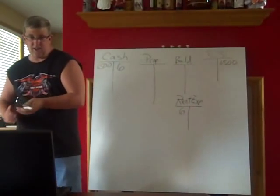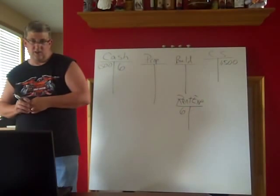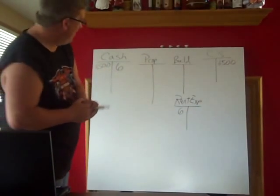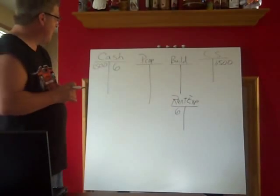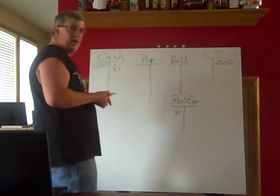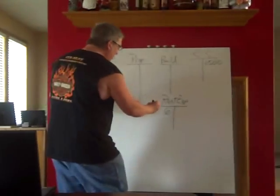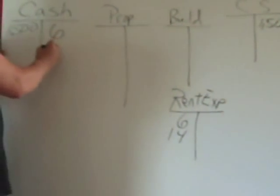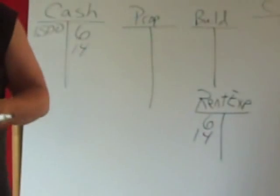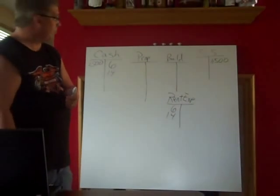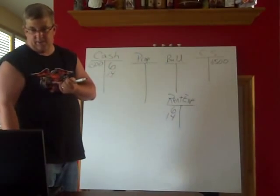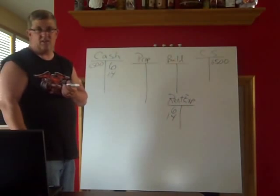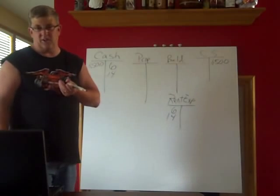Now we can roll the dice — I've rolled a 10. You've got to be kidding me, we hit rent again. So we're going to have another expense. We need to increase our expense account; we increase an expense by debiting. So we're going to have a $14 debit and a $14 credit. We reduce an asset account by crediting it, and we increase an expense account by debiting it.